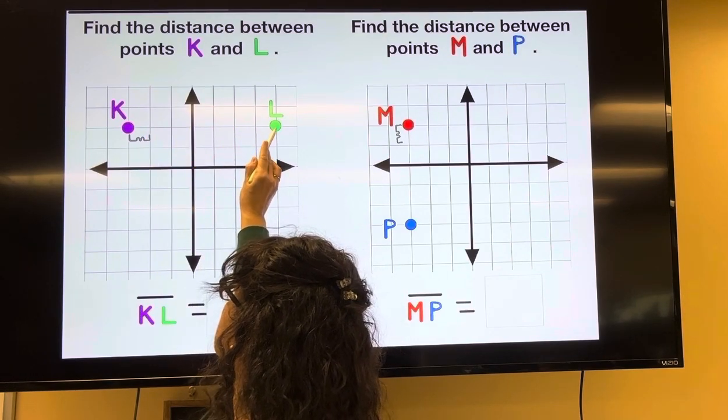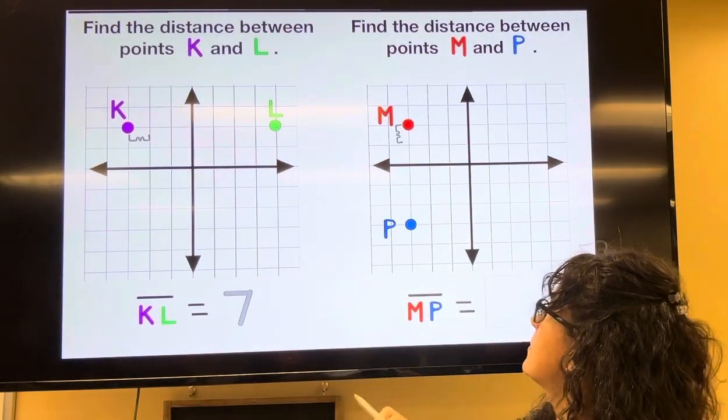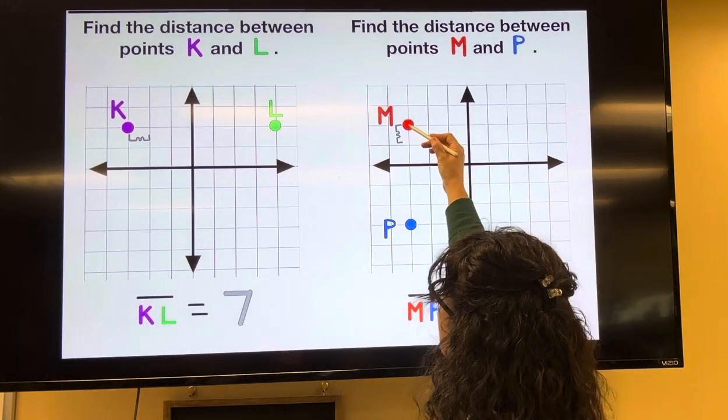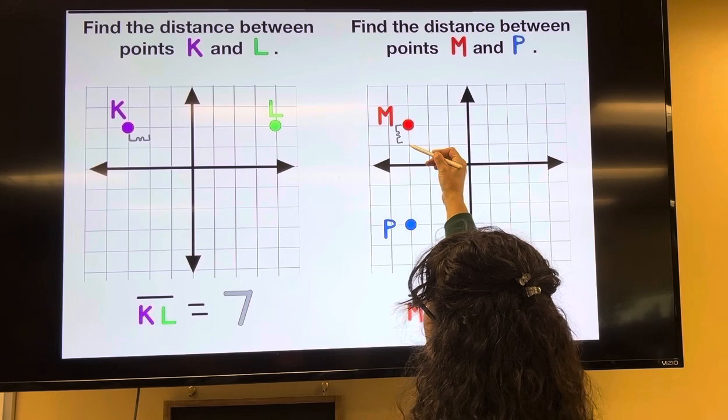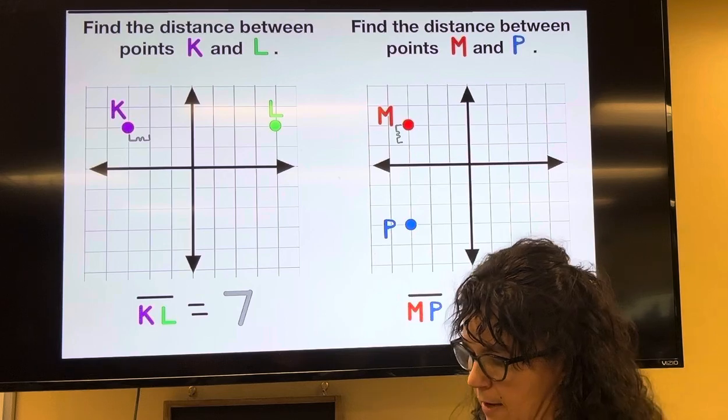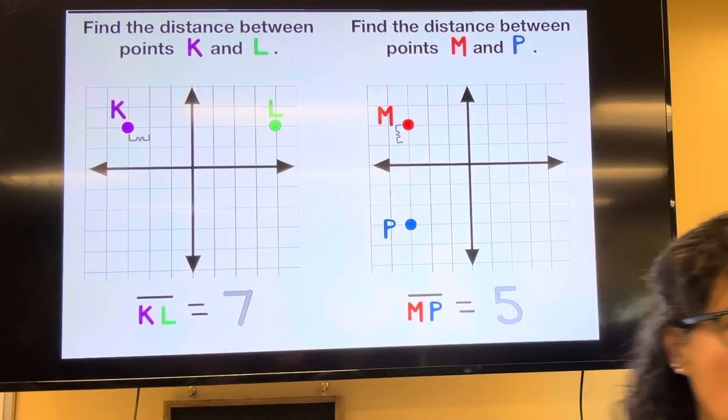6, 7. So from K to L is a distance of 7. And then from M to P, if I go from this red dot to right there, that's a distance of 1. Then I have 1, 2, 3, 4, 5, and M to P is length 5.